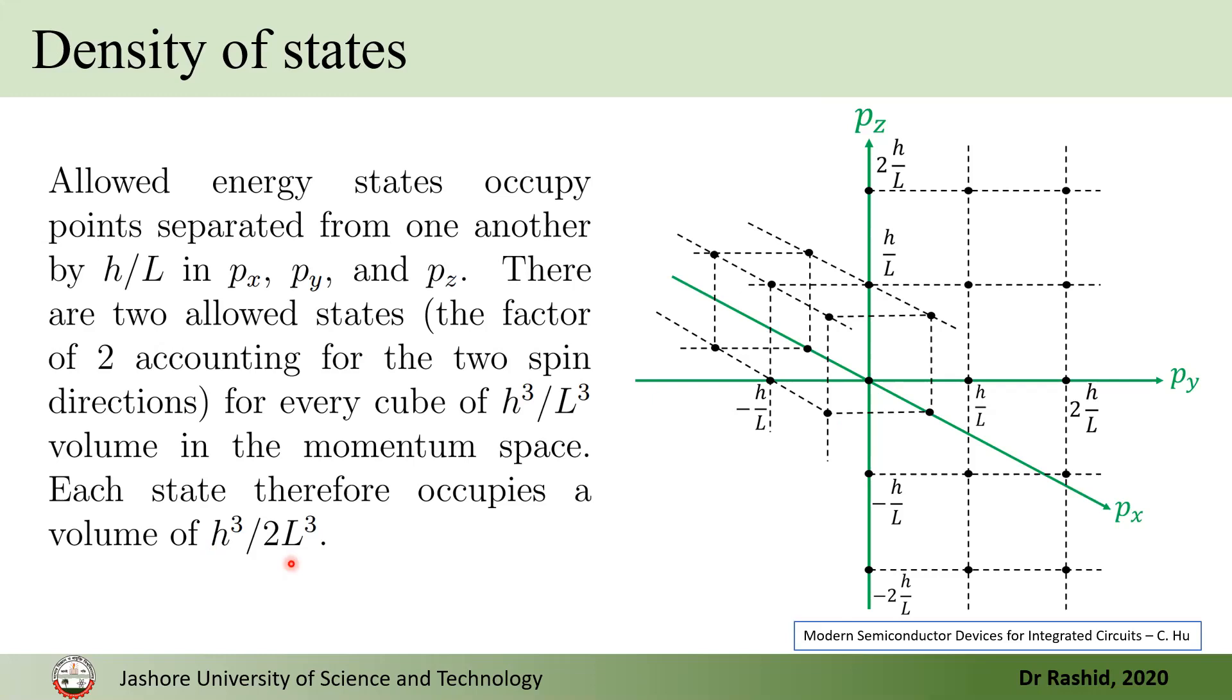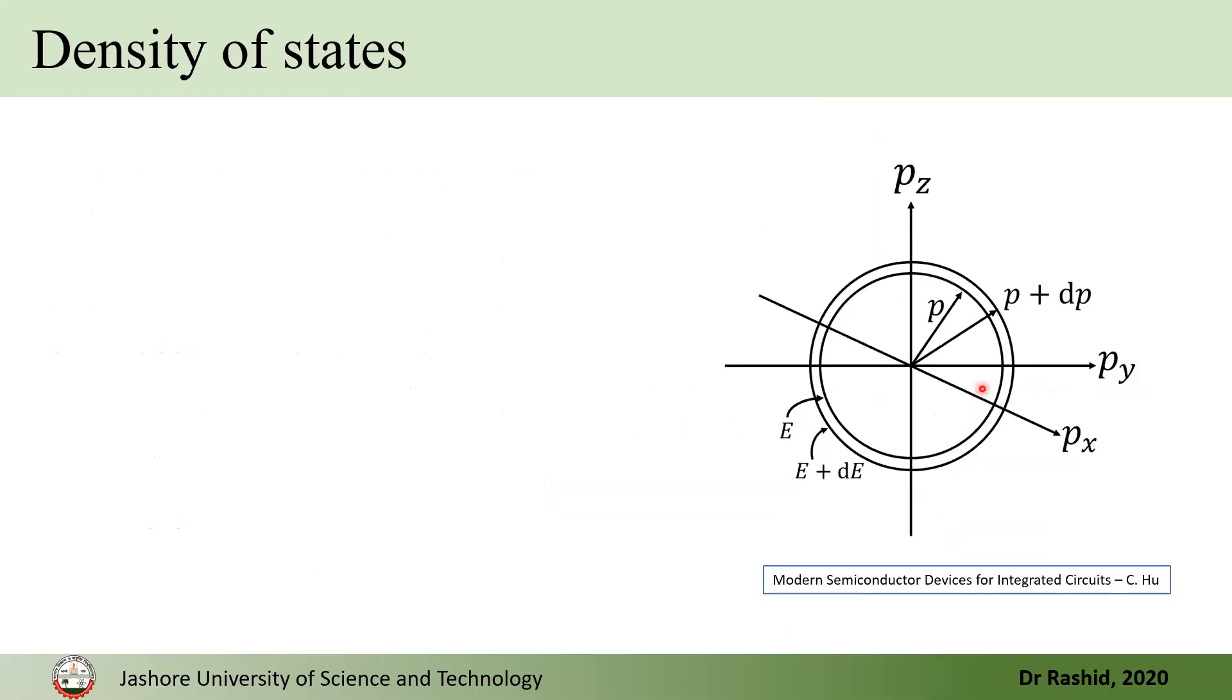Now, if we zoom out from here, in this momentum space, then we shall see that for a sphere or for a circle, this is in 2D, that's why it looks like a circle, but this is a sphere. For a sphere, for the sphere of length P, that all the points in this radius will have same momentum.